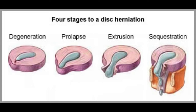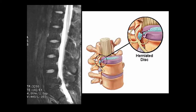A bulging disc is usually the first condition to manifest before a rupture or herniation. They are also typical in the lower back, occurring when a weakened or deteriorated disc swells through a crevice in the spine, extending outside its normal space. As the disc moves, its inner liquid-like nucleus begins to balloon towards the weakest point.